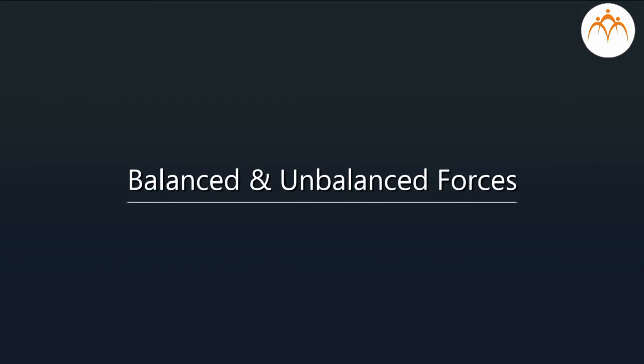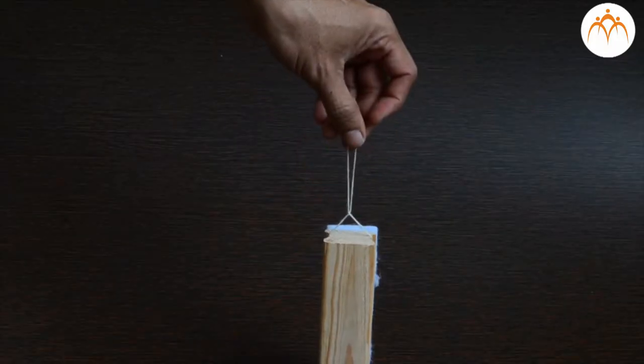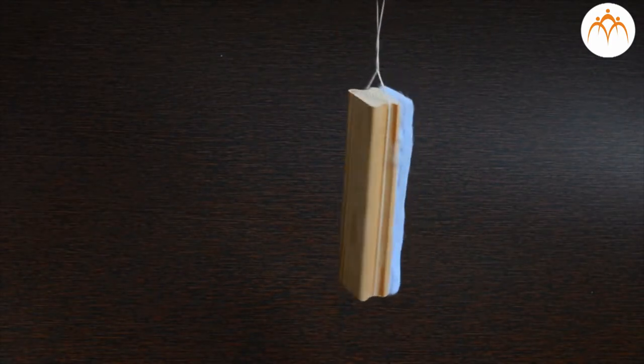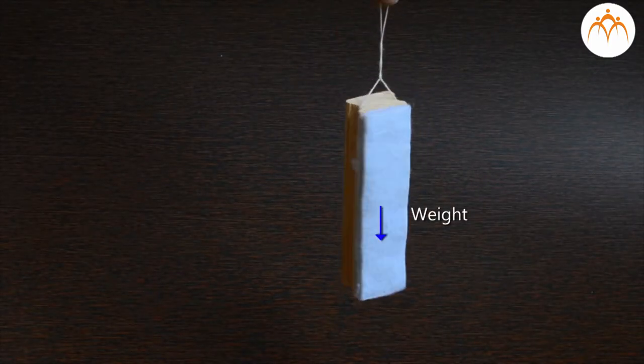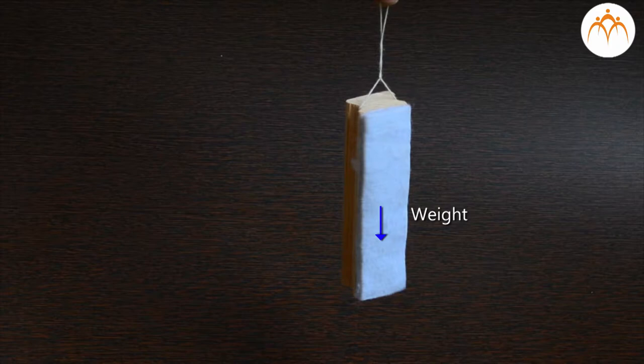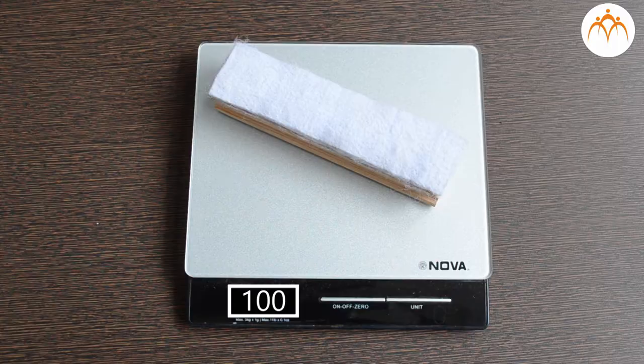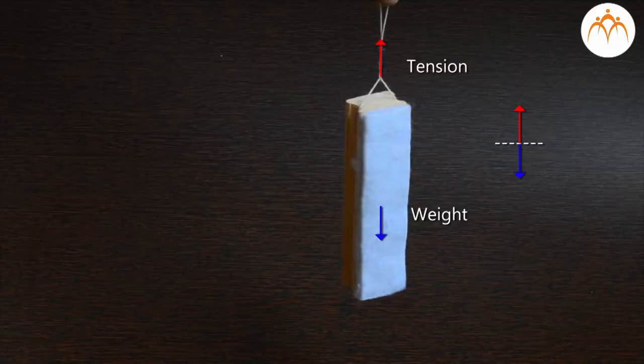Balanced and unbalanced forces. Let me tie this thread to this duster. When I lift it, thread gets stretched. Weight of the duster is pulling it in a downward direction, while tension in thread is pulling it up. If mass of the duster is 100 grams, how much force I am using to hold it back?